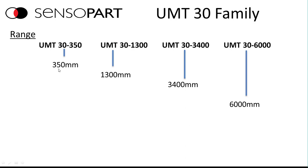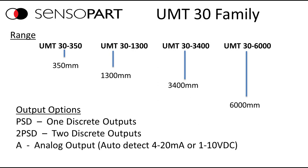Here's the part number range. We've got 350mm, 1300mm, 3400mm, and 6 meters. And each one of these is available with either discrete outputs or an analog, your choice.